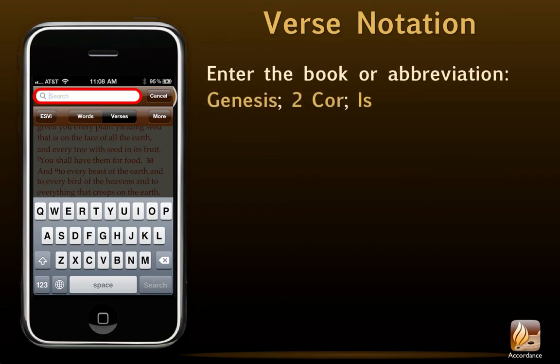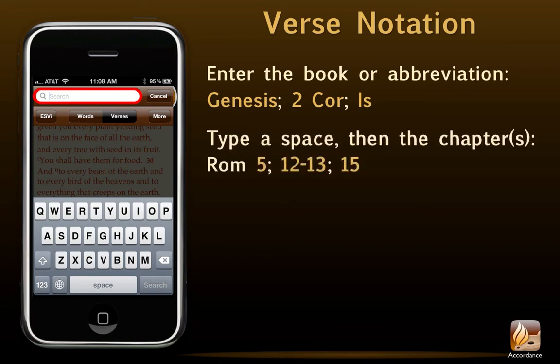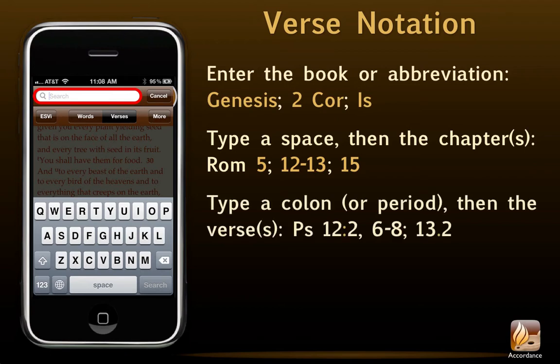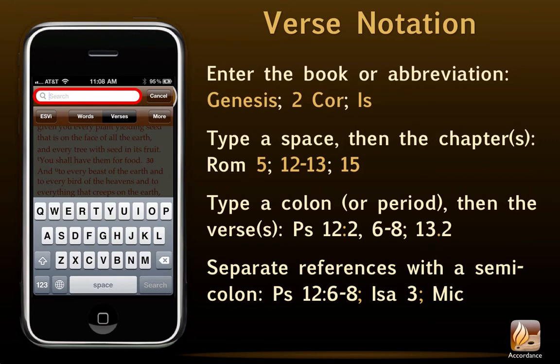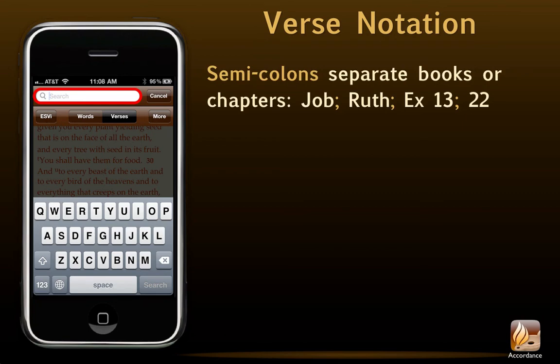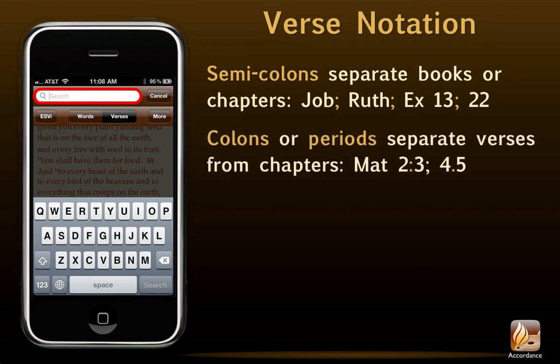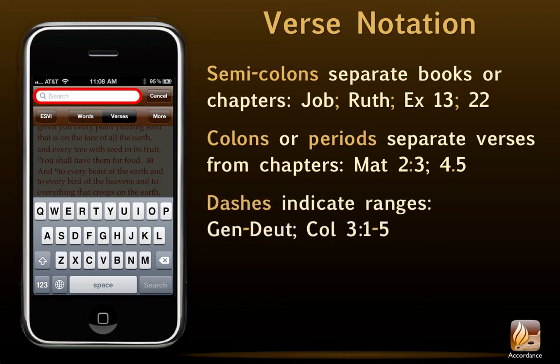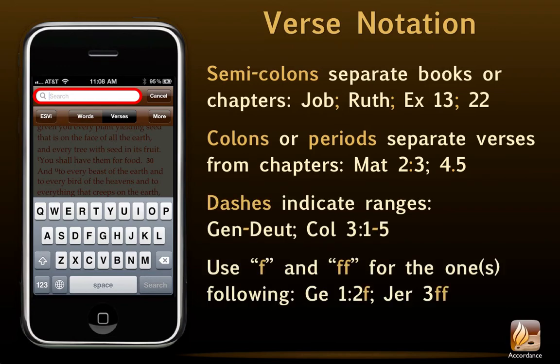All we have to do is simply type in the verses we'd like to see. They can be in any order, but we do have to follow the standard rules of verse notation. Enter the book or abbreviation — we need only type enough of the book's name to uniquely identify it. Type a space, then the chapters we'd like to see. Type a colon or a period, then the verses. Separate references with a semicolon. To put it another way: semicolons separate books or chapters, colons or periods separate verses from chapters, and dashes indicate ranges. We can use the abbreviation F for the verse or chapter following, and FF for the verses or chapters following.